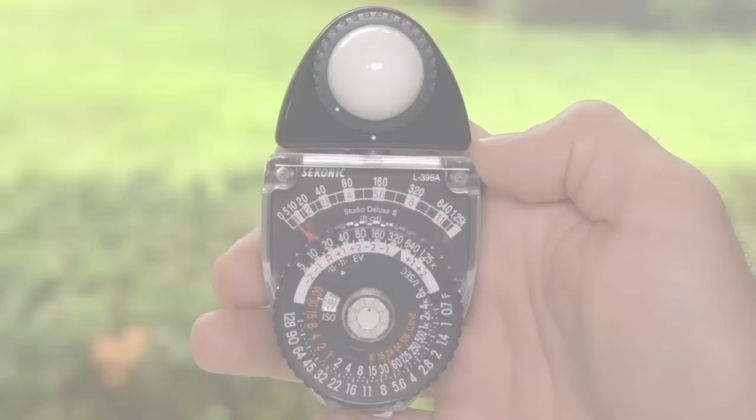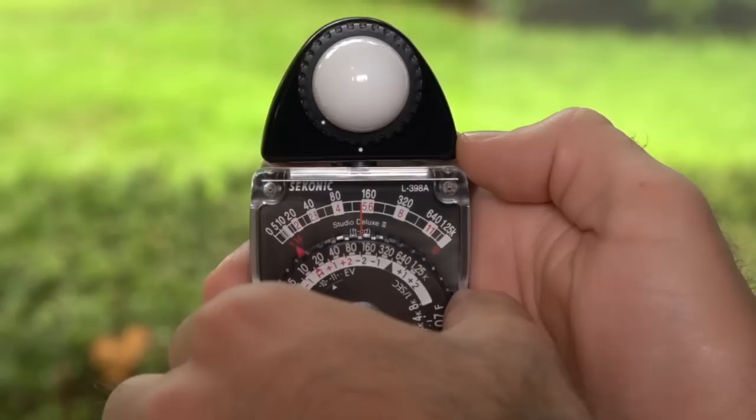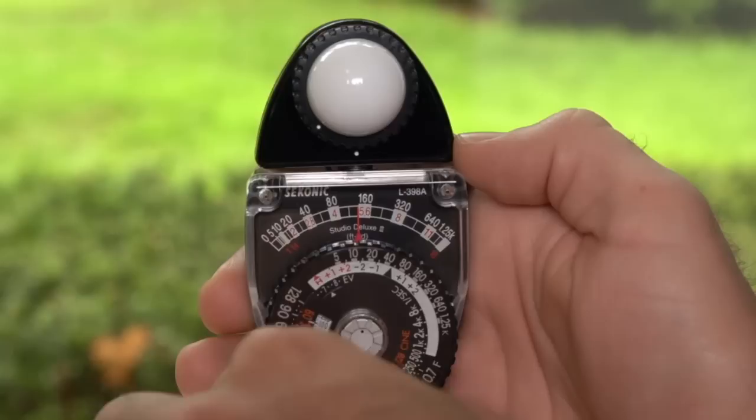Now press the silver stop button to measure the light. Grasp the outside edge of the dial and turn it to align the red pointer and the needle.